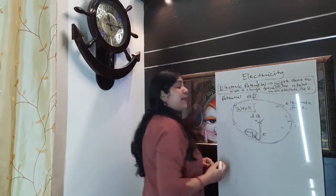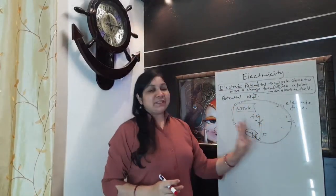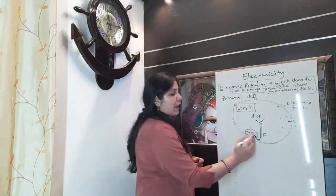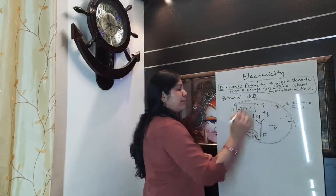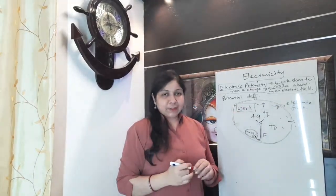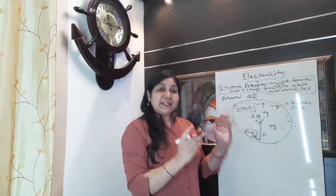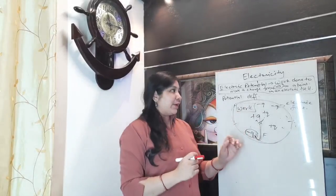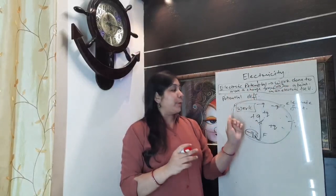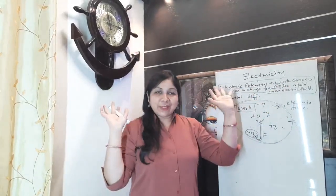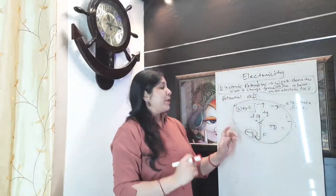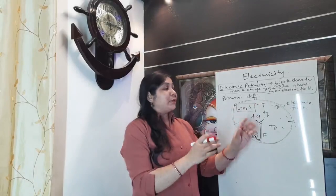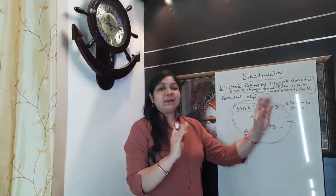Now what does infinity mean in this context? This field is defined as infinity because anywhere inside the electric field you can place another charge. There are infinite number of places where you can place this charge, and of course in all those places, if it is inside the electric field, the force of attraction or repulsion will be experienced. So infinity means only inside the electric field — there are lots of places, and wherever you are placing the charge inside the electric field, it will experience a force of attraction or repulsion.